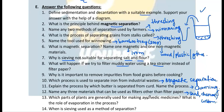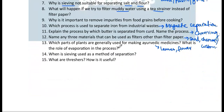Question 14: Which parts of plants are generally used for making Ayurvedic medicines? Leaves, stems, and other parts mentioned in your NCERT book are used. Evaporation also plays a role in that process — you should read that and write your answer. If you don't understand, ask in the comment section.